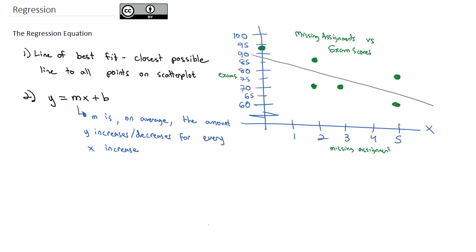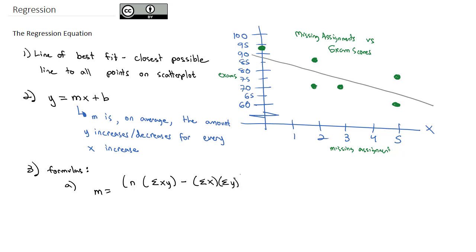So we might be interested in what is the value of m, and we're also interested in what is the value of b. Sure enough, we have a formula for each of those. The formula for m, the slope, is: in the numerator, the sample size times the sum of the x·y products, minus the sum of the x's times the sum of the y's. Then we divide by n times the sum of the x squareds, minus the sum of the x's squared.